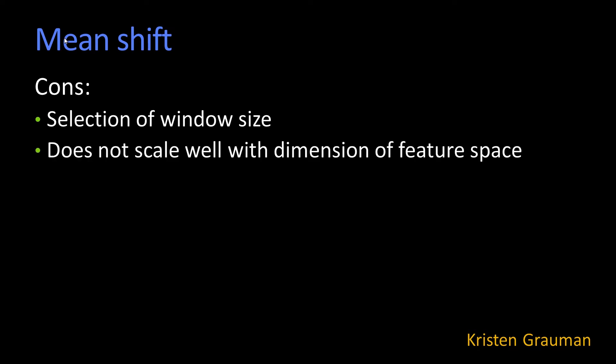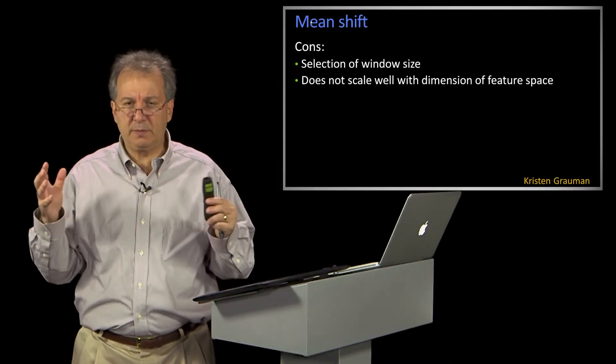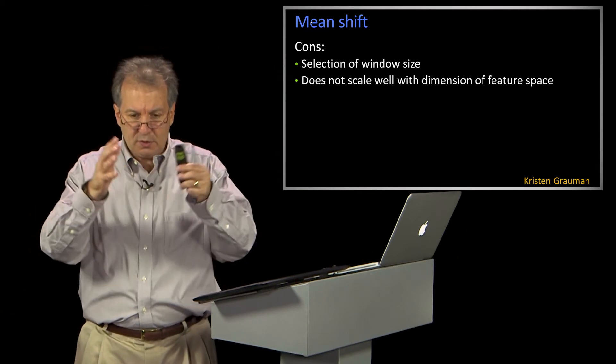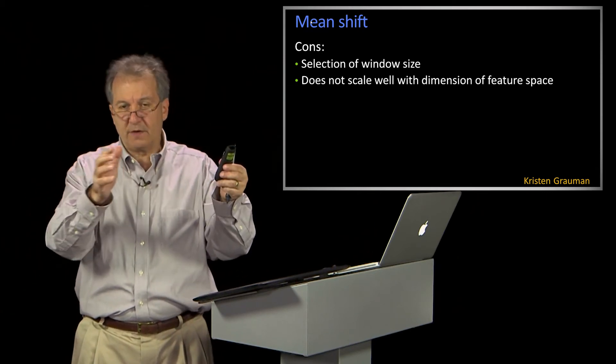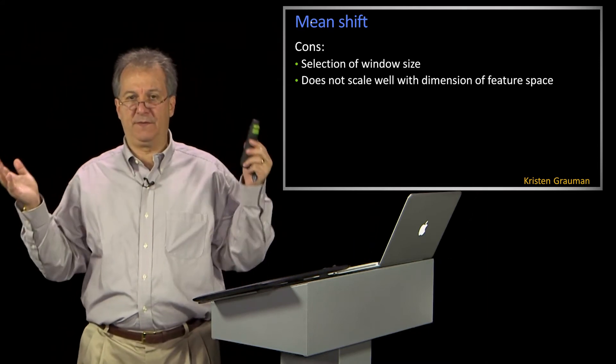The other problem is because you're moving in feature space. You want to make sure you get a reasonable number of points within your region of interest to shift for the mean. Well, suppose you've got a big feature space—say, 50 dimensions.